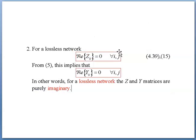Next, the second property is that for a lossless network, the real part of Zij equals 0 and the real part of Yij equals 0. In other words, for a lossless network, the Z and Y matrices are purely imaginary.